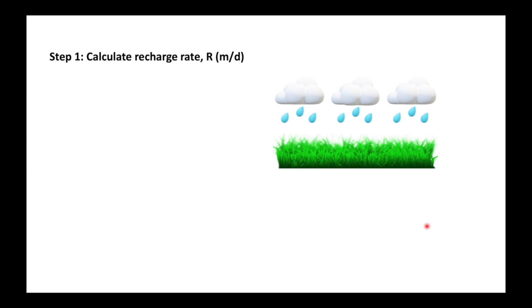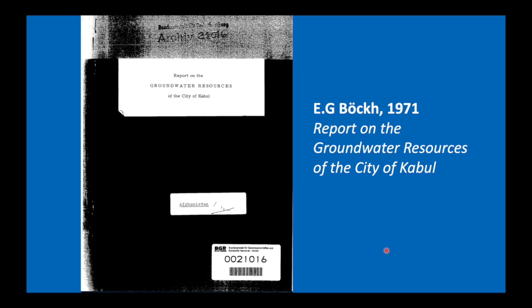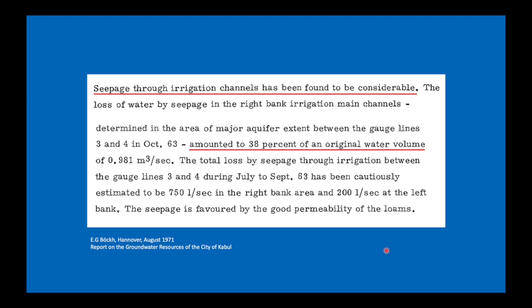The first thing we need to do is calculate the recharge rate R in meters per day — the amount of water recharging the aquifer from above. Going to the German Geological Survey in Hanover, we find a report by Buch 1971 on the groundwater sources of the city of Kabul, which noted that seepage through irrigation channels has been found to be considerable.